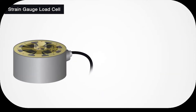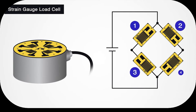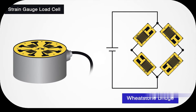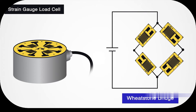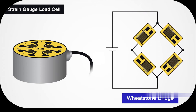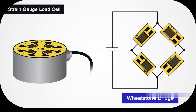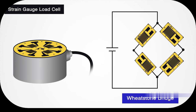A strain gauge load cell is made up of four strain gauges in a Wheatstone bridge configuration. A Wheatstone bridge is an electrical circuit that measures unknown electrical resistance by balancing two legs of a bridge circuit, one of which contains the unknown component. The Wheatstone bridge circuit provides incredibly accurate measurements. The strain gauges are bonded onto a beam which deforms when weight is applied.